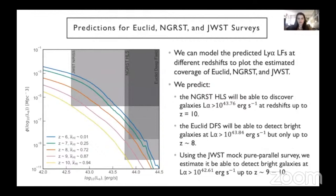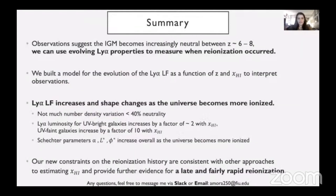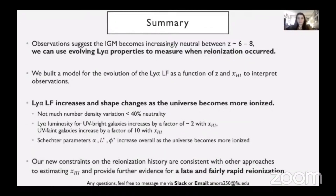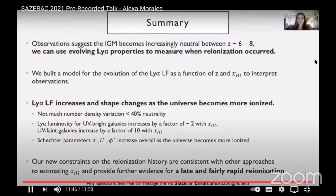We see that future surveys will be able to detect Lyman-alpha emitters at high redshifts. To summarize: the evolving shape of the Lyman-alpha luminosity function can provide more information about the IGM state. Ultimately, we can use this information to learn about the timeline of reionization and the evolving neutral fraction. With our model and its fit alongside observations, we can constrain the timeline of reionization further and provide evidence for a late and fairly rapid reionization consistent with others' approaches. Thank you so much for the opportunity to present. If anyone has questions, please feel free to message me through Slack or send me an email noted here at the bottom.